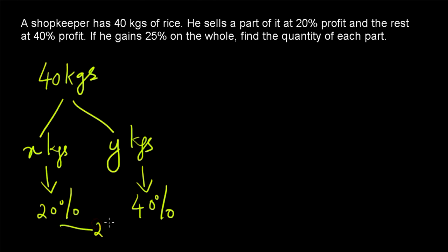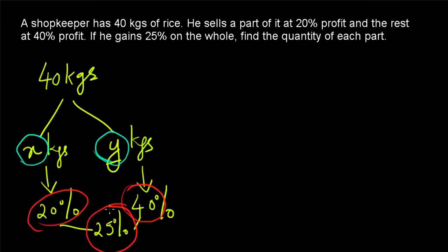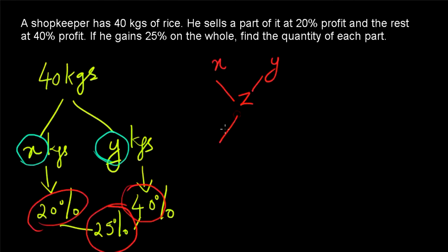Overall, he is gaining a profit of 25%. So 20% profit and 40% profit are combined together to get an overall profit of 25%. Since we have a combination here, we can use the rule of allegation. The rule of allegation states that if X and Y are combined together to form Z, then the proportion of X to Y will be given by the difference of Y and Z to the difference of X and Z.